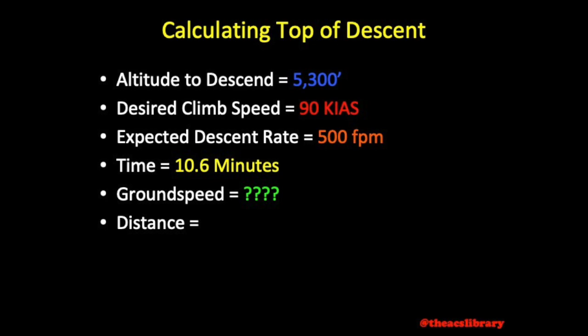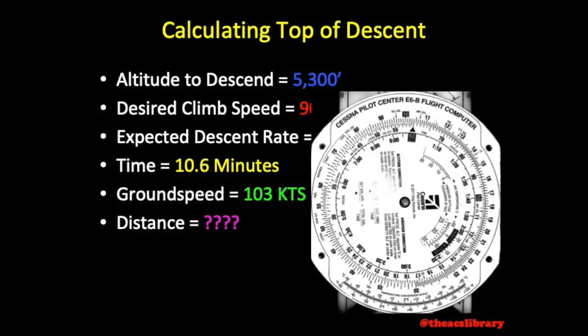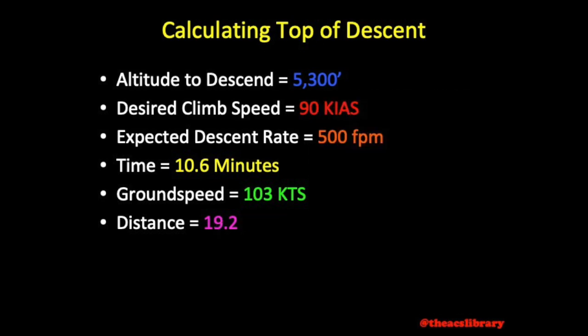The next step is to find ground speed. Based on conditions today, we find an expected ground speed of 103 knots. The last piece of the puzzle is distance, which can easily be found using our E6B by aligning the indicator with expected ground speed and reading distance over time. After traveling at 103 knots over 10.6 minutes, we will have covered 18.2 nautical miles. We will select a distance of 19.2 nautical miles from Tuella's runway, increasing our distance by a mile to account for our distance from the runway on downwind.